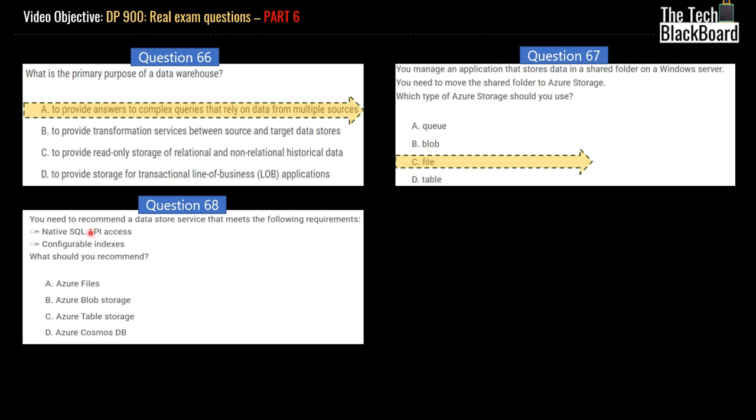Coming to our question number 68, which says that you need to recommend a data store service that meets the following requirements: native SQL API access, configurable indexes. What should you recommend? Should you recommend Azure Files, Blob Storage, Azure Table Storage, or Azure Cosmos DB? Now, if you see the options given here, Azure File does not have capabilities of these API access, neither Blob or Table. It's only Cosmos DB that gives you native support for Azure API access and configurable indexes. So the correct answer is Azure Cosmos DB.